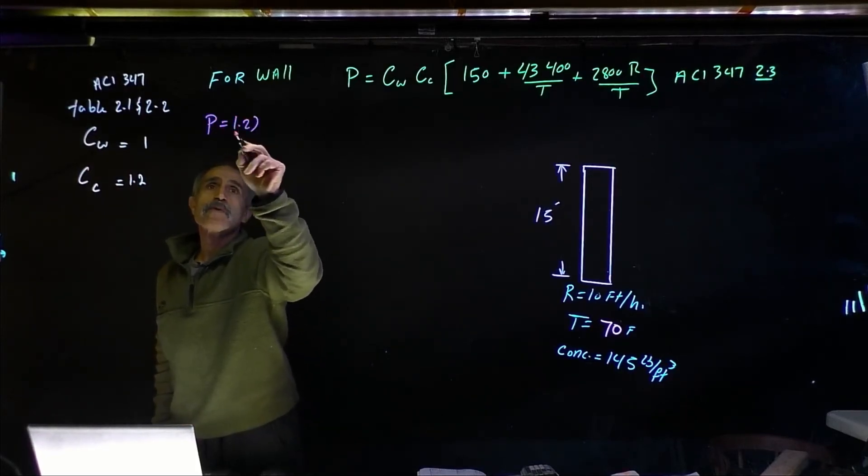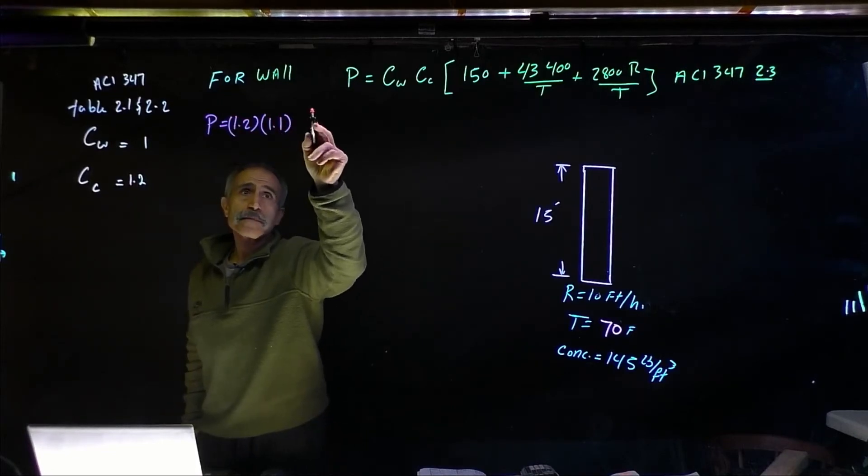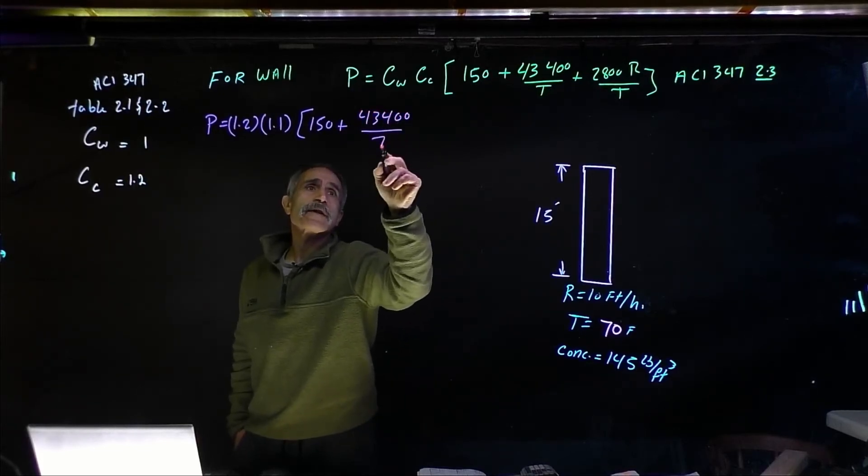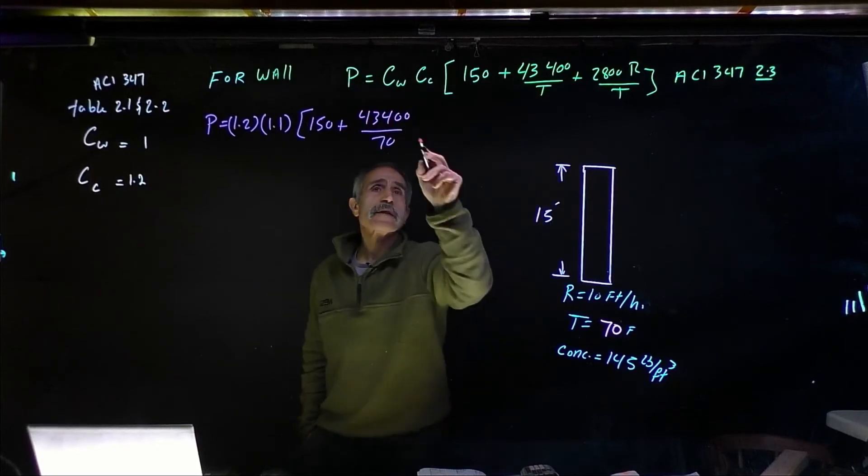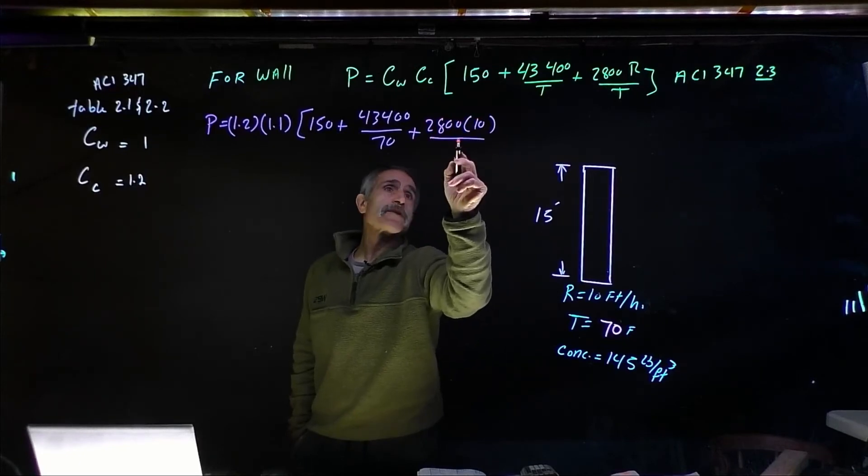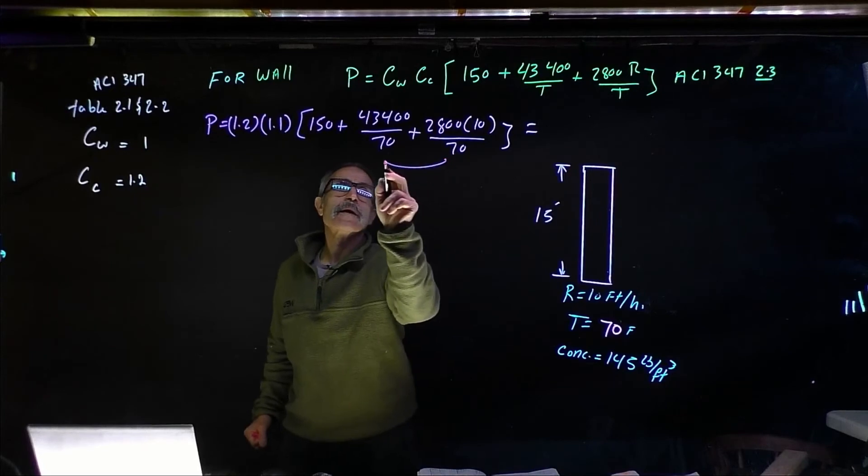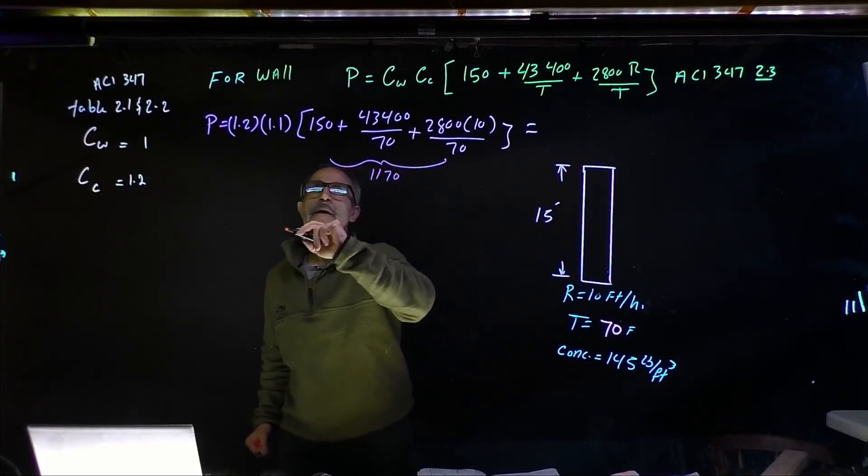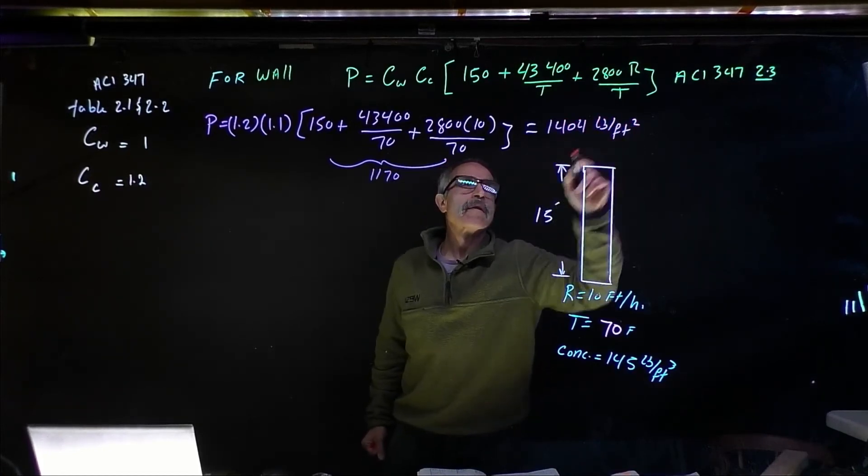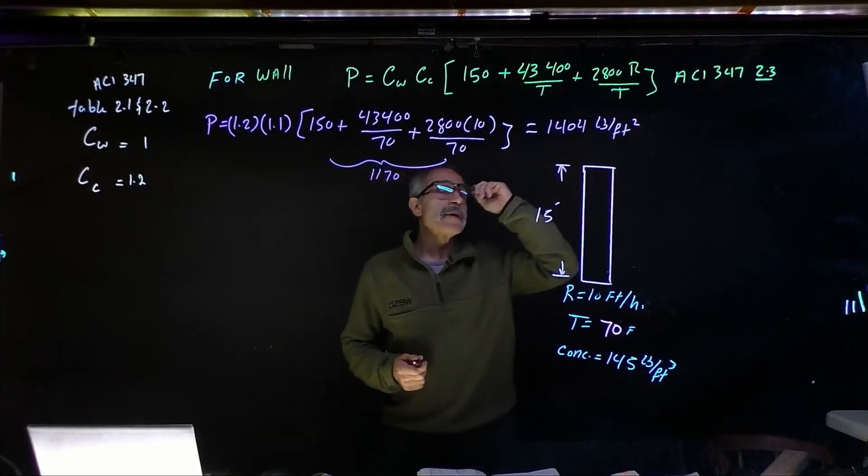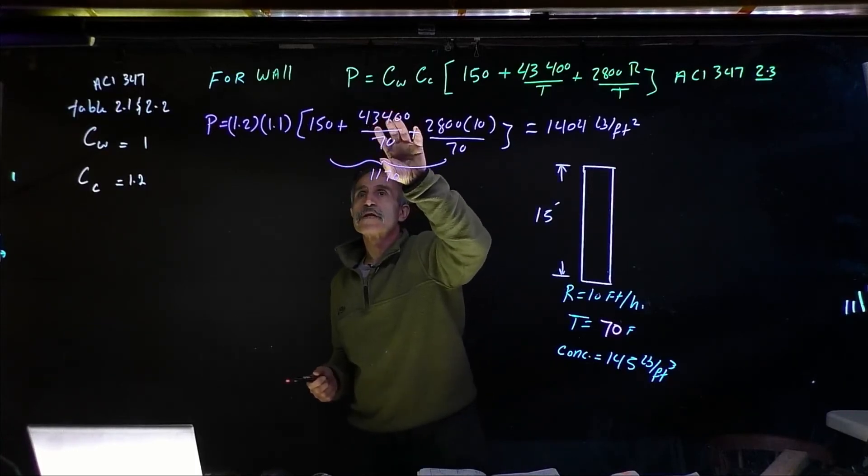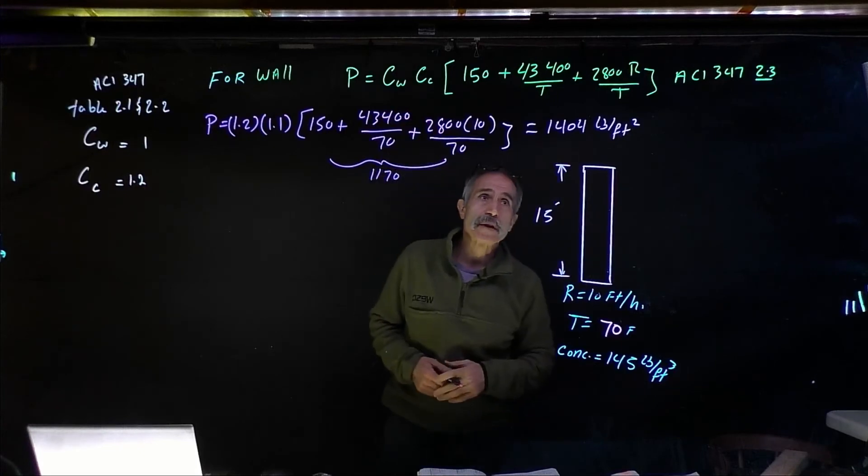Pressure is equal to 1.2 times 1.1, 150 plus 43,400 divided by 70. The temperature at the time of placement is 70 degrees, plus 2,800 at 10 feet per hour, divided by the temperature at 70. And that will give me, so we're going to come out with 1,404 pounds per square foot. And this comes out to 1,170. You can get this base from a table, as shown on the board here. So now we have that.